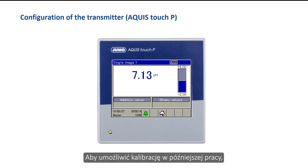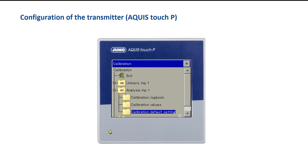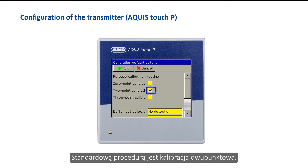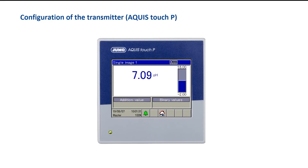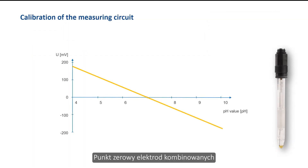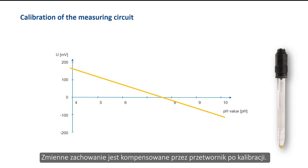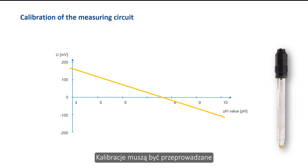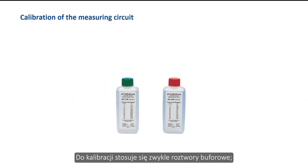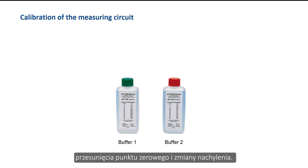In order to enable calibration in later operation, this must be released. The standard procedure is two-point calibration. The zero point of combination electrodes changes during their lifetime and the slope also varies; this changing behavior is compensated by the transmitter after calibration. Calibrations must be carried out at new start-up and periodically during the lifetime of the electrodes. Buffer solutions — liquids with a defined pH value — are used for calibration. Two-point calibration compensates for both zero-point shifts and slope changes.